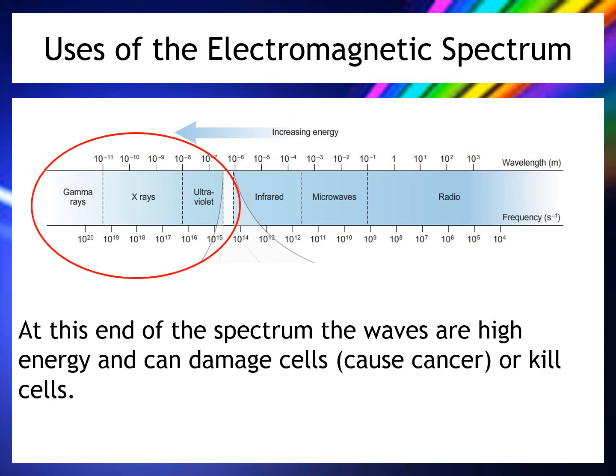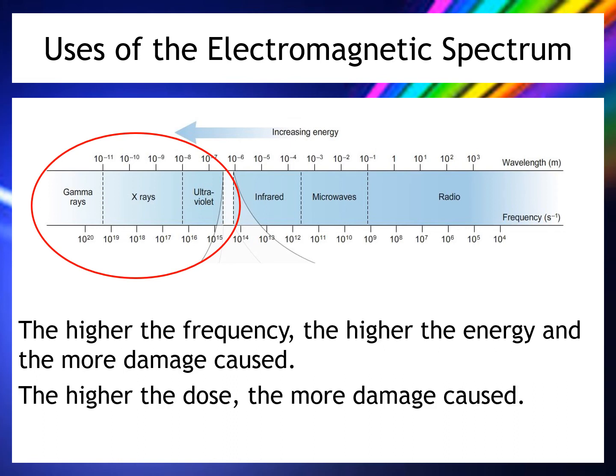At the high-energy end of the spectrum, waves can damage cells and cause cancer. Going back to unit four, high-energy waves can cause changes to the DNA of a cell so it grows abnormally, forming tumours — or they can kill the cell outright. The higher the frequency — gamma being the highest — the higher the energy and the more damage caused.